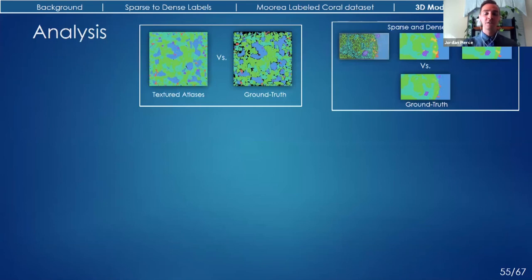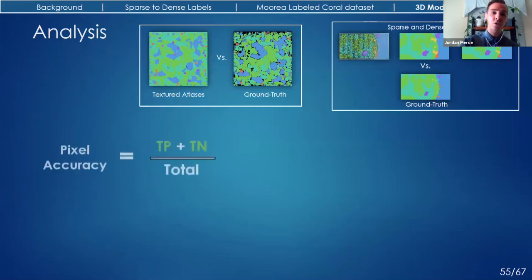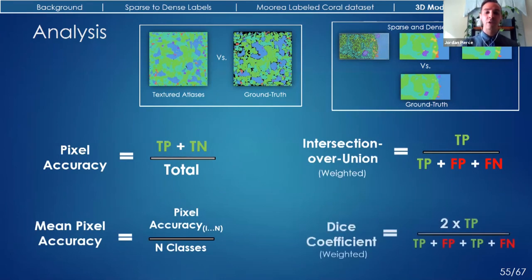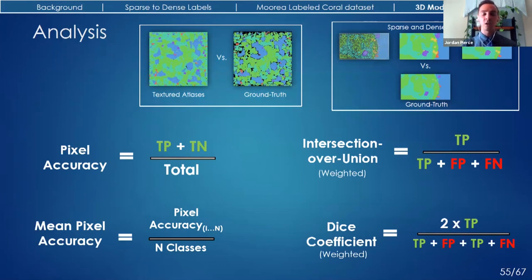In this chapter, I compared the sparse labels, dense labels, and texture atlases against the ground truth versions that I created. For metrics, I used pixel accuracy, mean pixel accuracy, intersection over union, and dice coefficient score — which is the same as F1 score, and is just the harmonic mean between precision and recall.